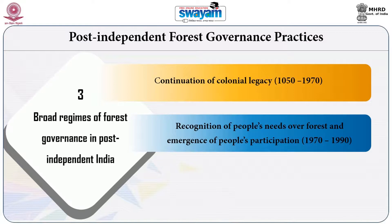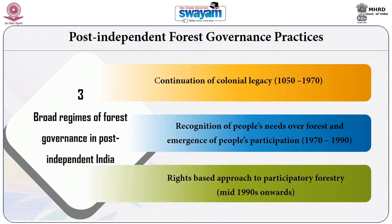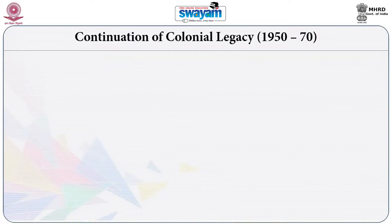The second regime of forest governance begins from mid-1970s and continues till the early 1990s. In this period, forest governance in India witnessed significant change in terms of people's participation and community involvement in forest. The third, contemporary regime is characterized by the emergence of rights-based approaches in forest governance from mid-1990s onwards.